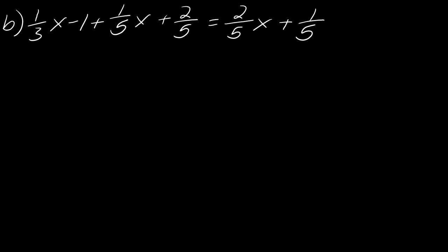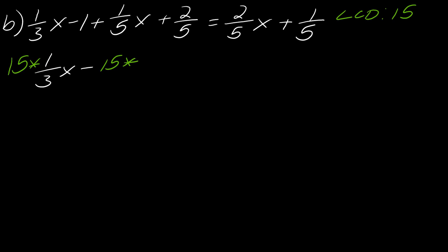Moving on to problem b — same idea. First we've got to find the LCD of all fractions; the LCD in this case is again 15. I'm going to multiply each part of this problem by 15. Be careful when you do this — everybody looks at this and thinks you just multiply by the fractions, but it's all parts of the problem, so make sure you multiply even the whole number one.